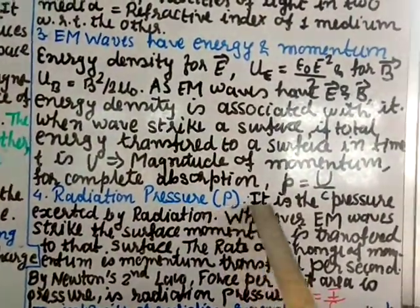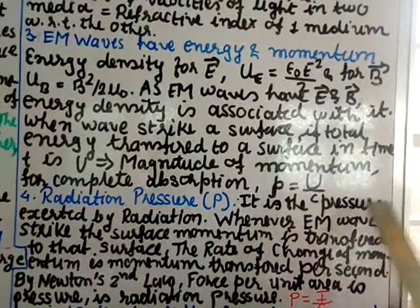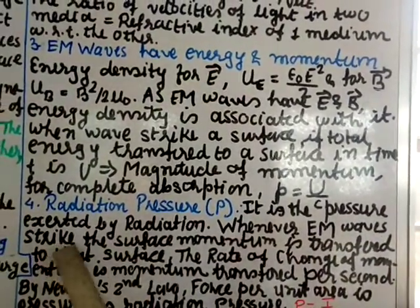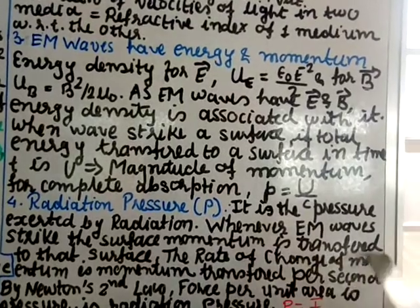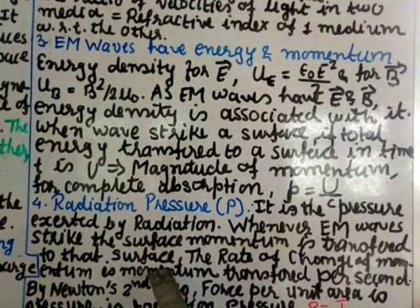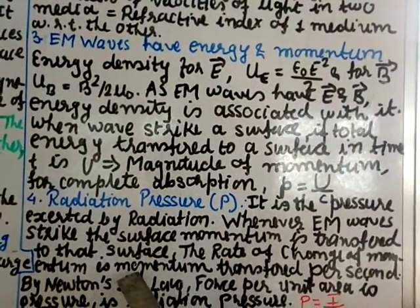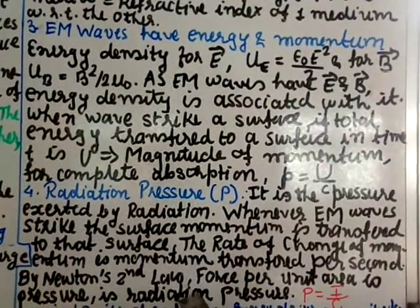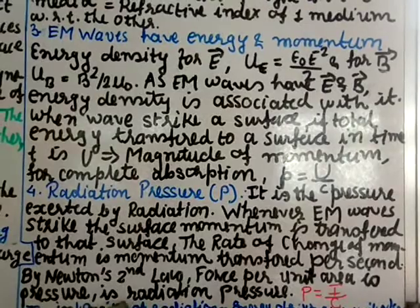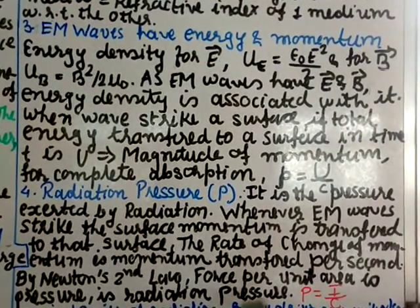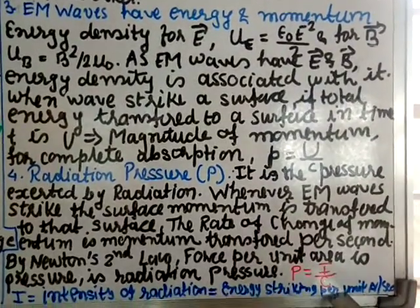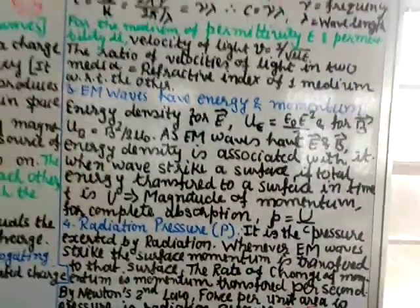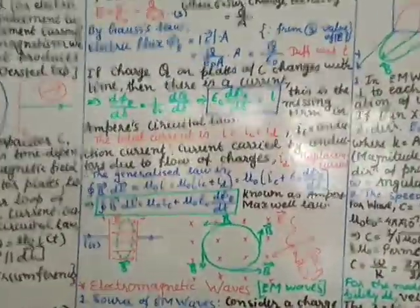Property 4: Radiation pressure P. It is the pressure exerted by radiation. Whenever EM waves strike a surface, momentum is transferred to that surface. The rate of change of momentum is momentum transfer per second. By Newton's second law, force per unit area is pressure, and this radiation pressure is given by P = I/c, where I is the intensity of radiation. We will keep this much for today. Thank you very much.